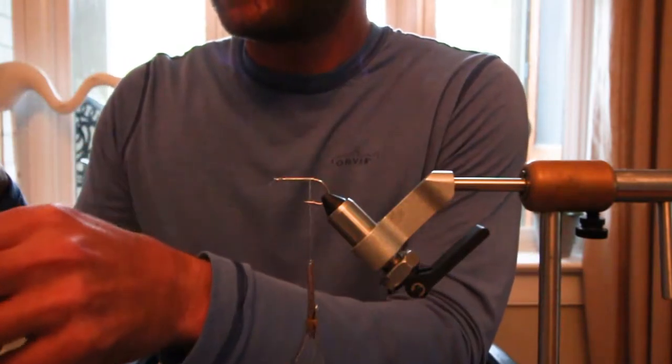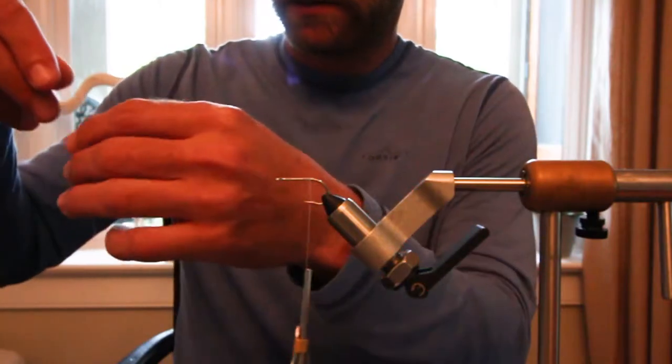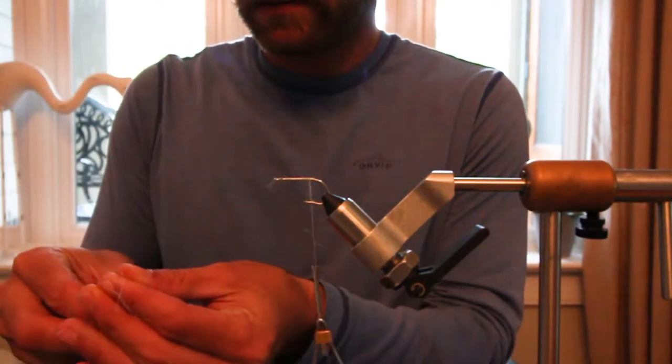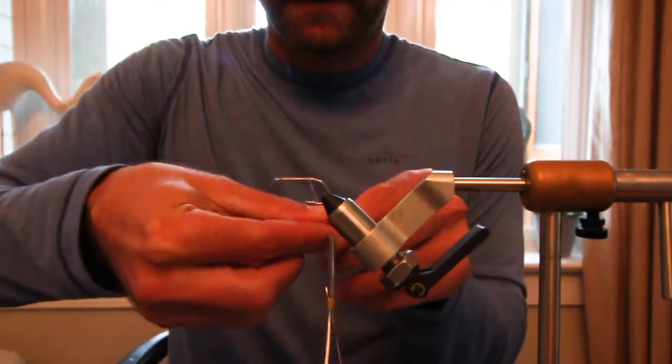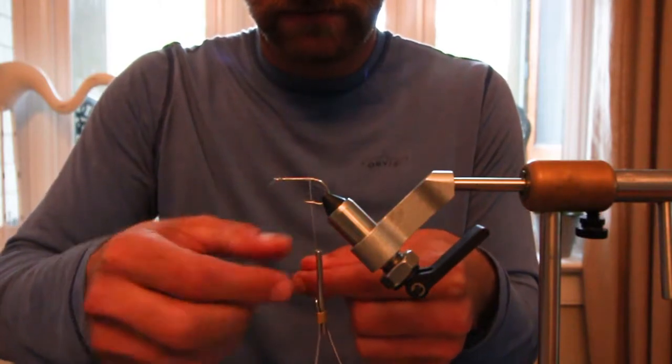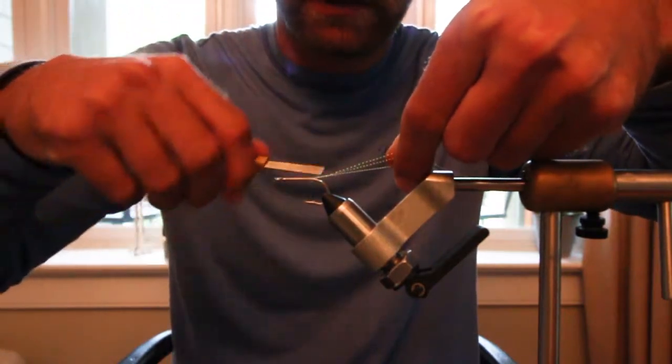First thing we're going to do is we're going to take one strand of flash, half it, give you four pieces. Make sure they're even, and go ahead and tie them on towards the end of the shank.